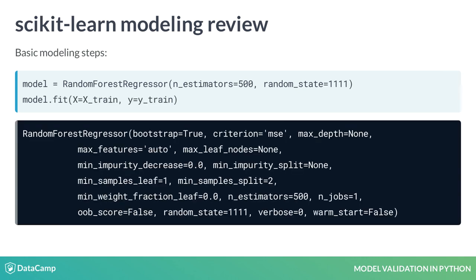The .fit method has two main arguments: X, an array of data used in the model as training data, and Y, an array of response values matching the size of the X array. When .fit is used, the model parameters will be printed in the console.